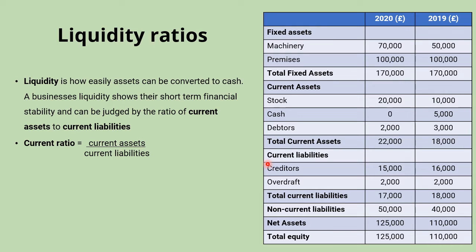There are two ratios we use to calculate liquidity. The first is the current ratio: total current assets ÷ total current liabilities. For this business in 2019: £18,000 ÷ £18,000 = 1:1 (or simply 1). In 2020: total current assets of £22,000 ÷ total current liabilities of £17,000 = 1.3:1.